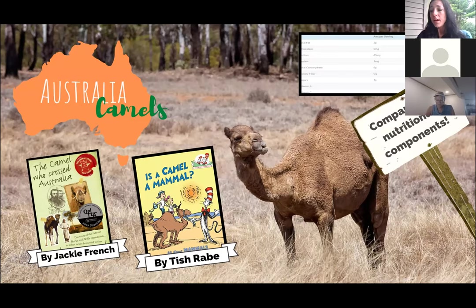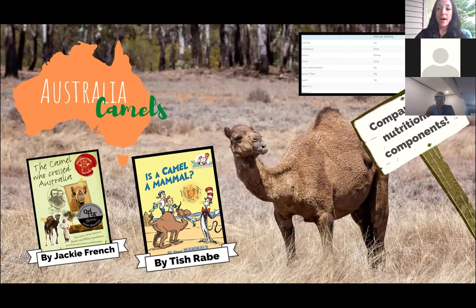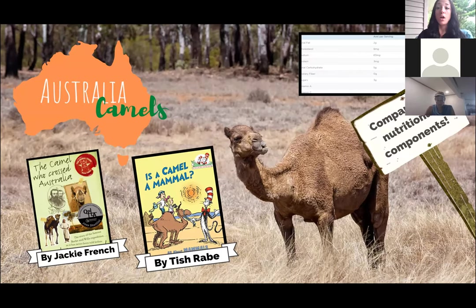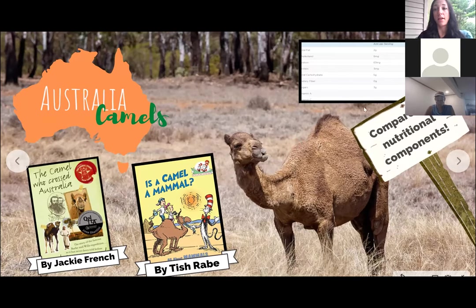The Camel Who Crossed Australia is a historical fiction book appropriate for junior high or older. It looks into the Australian explorers Robert O'Hara Burke and William John Wills and their trek across Australia from north to south between 1860 and 1861. Much of the book is told from the perspective of the camel, named Belsing. You can make connections with westward expansion and looking at explorers in other countries and the feats they accomplished.